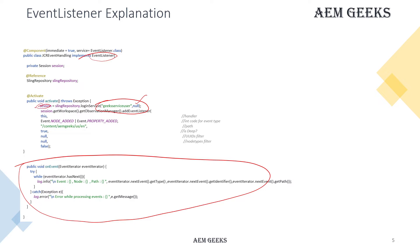Whatever events or paths this session has permissions for — only those events will be notified. Once you have the session, you get the workspace from it, and from that workspace you get the observation manager. Using the observation manager you call addEventListener, which registers the listener responsible for listening to events, while onEvent handles them.